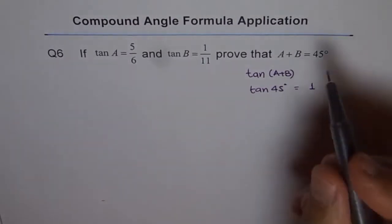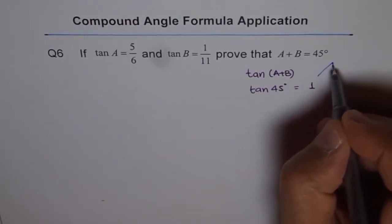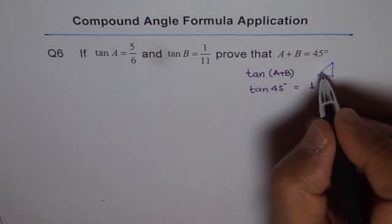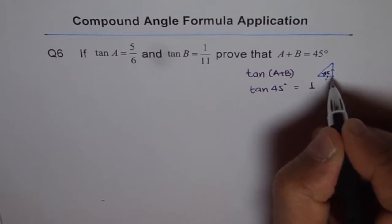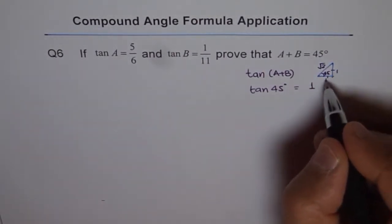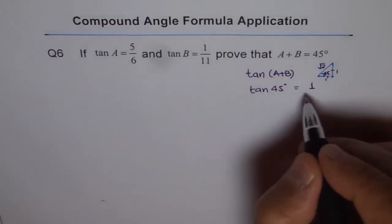I hope you remember this special triangle in which this angle is 45 degrees. These two sides are equal to 1 and that is square root 2. So it is opposite over adjacent. So tan of 45 is 1.